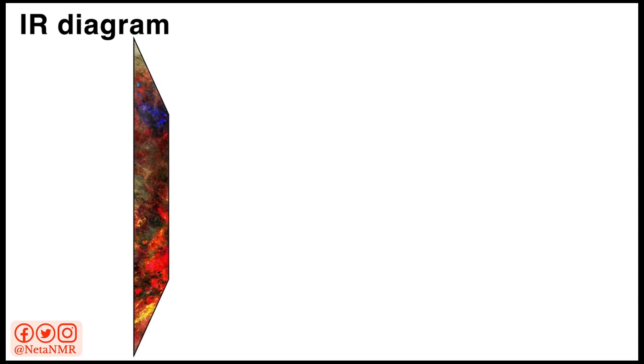Let's start by having a look at the infrared spectroscopy method. We'll see how it works and how we can obtain the infrared spectra. First, we'll have a look at the general idea of how infrared spectroscopy works when we want to analyze an object. Let's say we want to analyze a painting.